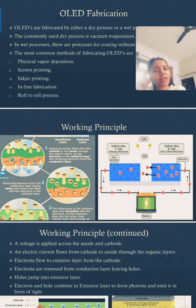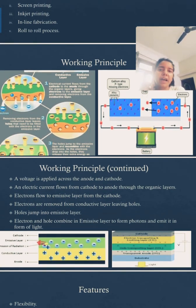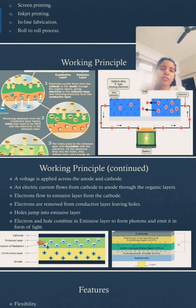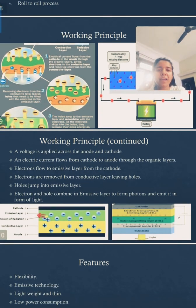Working principle: A voltage is applied across the anode and cathode terminals. An electric current flows from cathode to anode through the organic layers. Electrons flow through the emissive layer from the cathode. Electrons are removed from the conductive layer, leaving holes. Holes jump into the emissive layer. Electrons and holes combine in the emissive layer to form photons and emit light. Photons are packets of light.